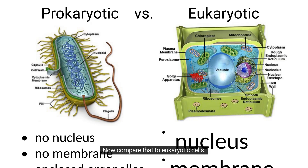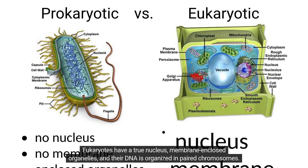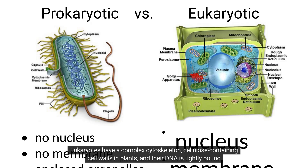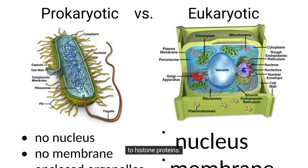Now compare that to eukaryotic cells. Eukaryotes have a true nucleus, membrane-enclosed organelles, and their DNA is organized in paired chromosomes. The cytoplasm shows active streaming and they divide by mitosis. Their flagella, when present, are more complex and their ribosomes are larger. Eukaryotes have a complex cytoskeleton, cellulose-containing cell walls in plants, and their DNA is tightly bound to histone proteins.